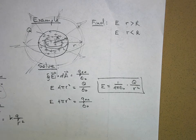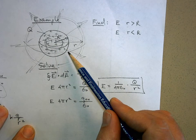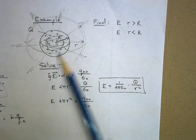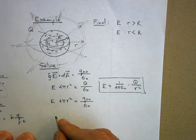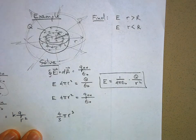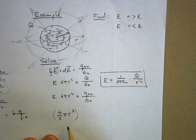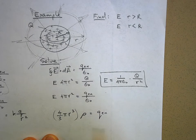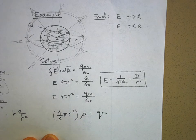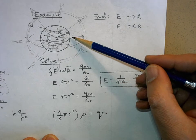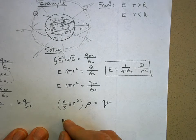We know the total charge and the total volume, so we can find the volume charge density ρ. If we multiply ρ by the volume of the Gaussian surface, that's how much charge is inside. The volume of my Gaussian surface is (4/3)πr³. Times ρ equals the charge enclosed. Since this is a uniform charge density, ρ equals the total charge Q divided by the total volume.